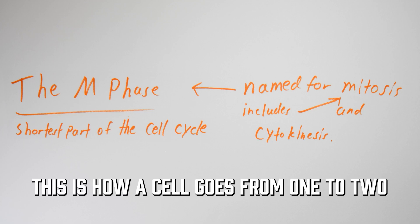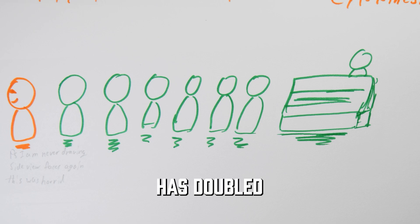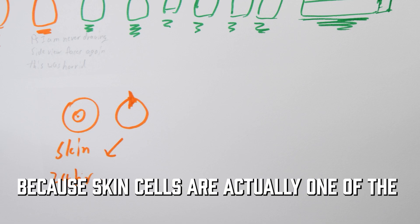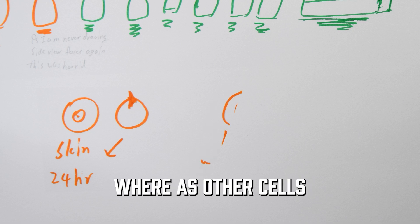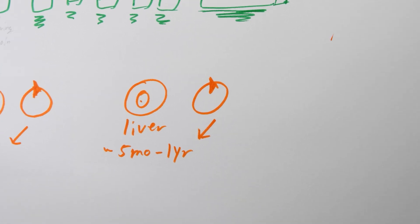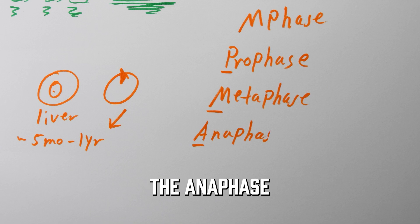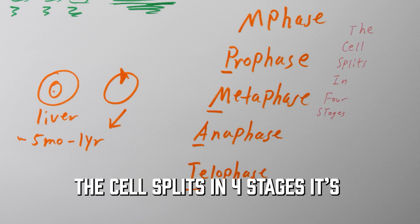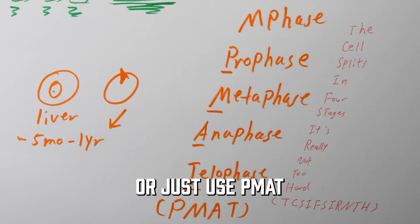This is how a cell goes from 1 to 2. You can observe the M phase happening by turning around to talk to your friend while waiting in the school lunch line — once you turn back, you'll notice the amount of people in front of you has doubled. Skin cells are actually one of the fastest replicating cells in the human body at about 24 hours per cell cycle, whereas other cells can take up to 1 year per cycle. The mitosis phase of the M phase has 4 phases: the prophase, the metaphase, the anaphase, and the telophase — remembered with the acronym PMAT.